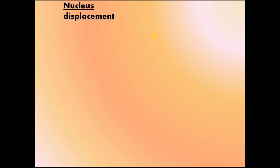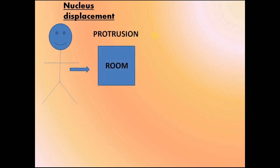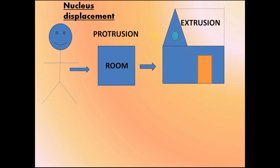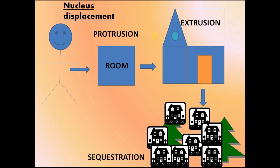The second change is nucleus displacement. Before we start, there are three terms you should know: protrusion, extrusion, and sequestration. I will give you an example to remember them. Imagine you are sitting in your room — when you come out of your room, it is called protrusion; when you come outside of your home, it is called extrusion; and when you go out of your town, it is called sequestration. In this example, imagine yourself as the disc.